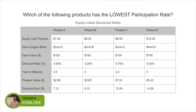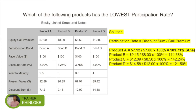In order to get to the answer, all you need to do is use the discounted sum divided by the core premium — you'll be able to get the answer. With the working shown on the screen, you will be able to see that Product A has got a participation rate of only 1.71%, and Product C has got the highest of 2.74%.